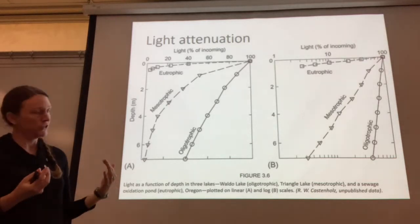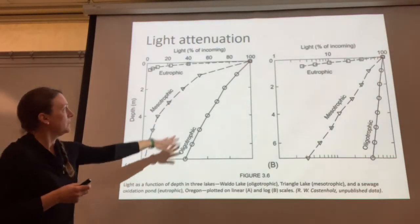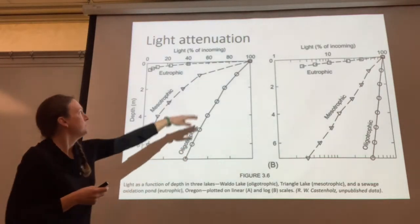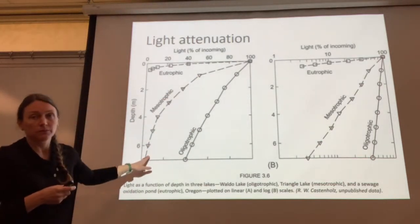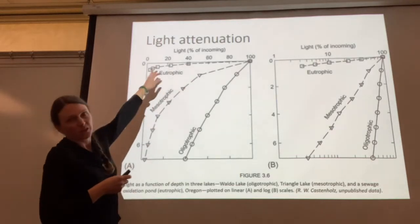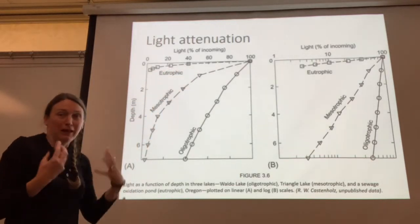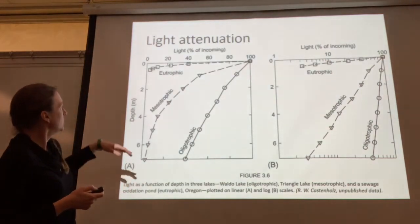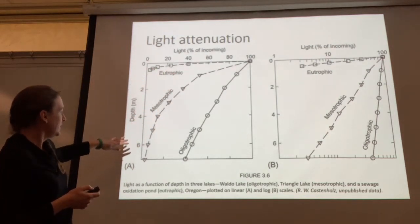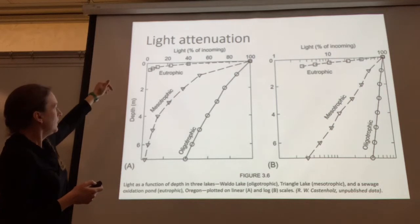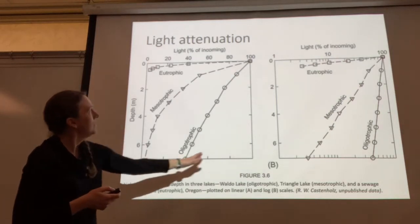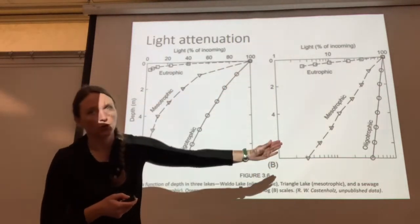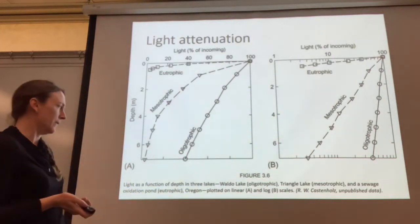Here you can see light attenuation for different trophic states. Oligotrophic refers to a very nutrient-poor system with very clear blue water. Mesotrophic systems have a little more nutrient and productivity. Eutrophic systems are green, gunky systems with lots of algae and life but not clear water. The percent of incoming light is shown on both a normal scale and a logarithmic scale — the curvy trends become linearized on the logarithmic scale, which helps us see patterns.